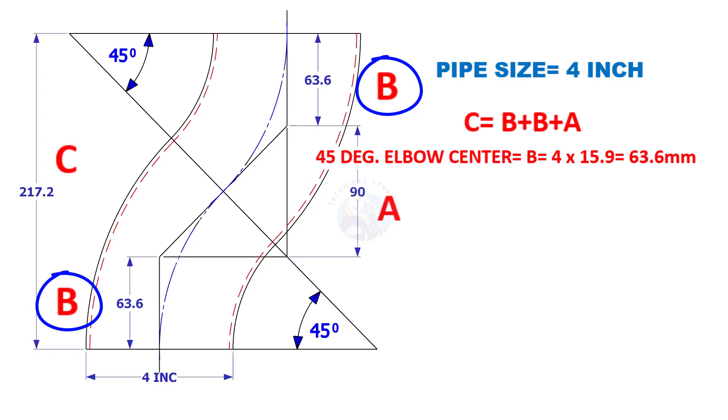Elbow center B is 4 inches multiplied by 15.9. 15.9 is a constant. So the value of B equals 63.6 millimeters.